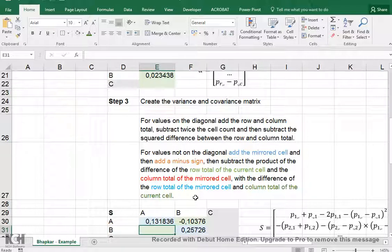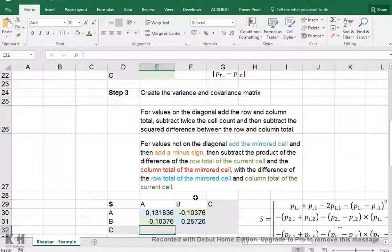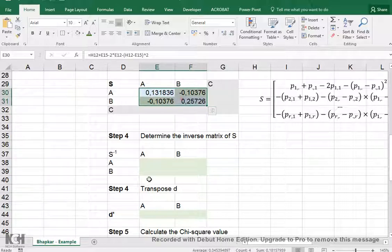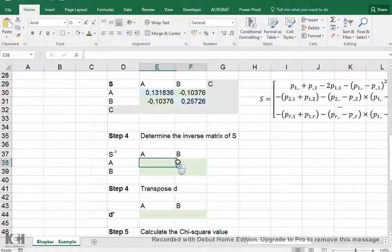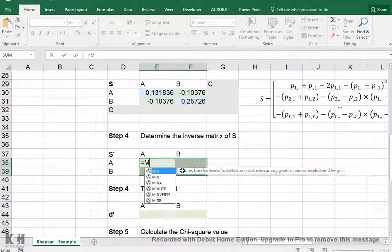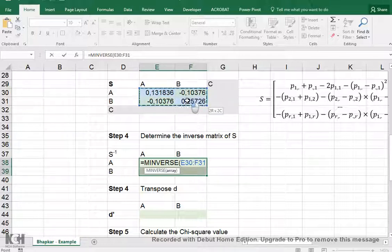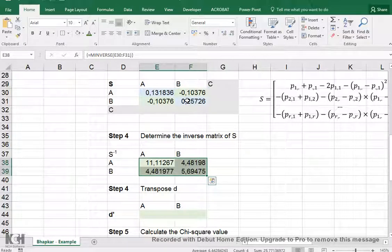And then we can press enter and we actually have the value here. We can do the same, but because the calculations are actually symmetric, we can simply say that this one will be the same value as that one. Finally, we can determine the inverse matrix of S. So this is our S and we need the inverse matrix. So I select the same amount of cells and then start typing equals MINVERSE, which simply returns the inverse of a matrix. Select the array,